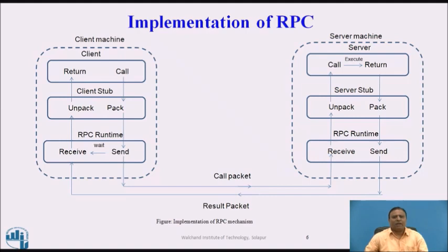RPC Runtime Client: The RPC runtime on the client's machine receives the call request message from the client stub and sends it to the server machine. It also receives the message containing the result of procedure execution. On the other hand, the RPC runtime on the server machine receives the result from the server stub and sends it to the client's machine, and also receives the call request from the client's machine and passes it to the server stub.